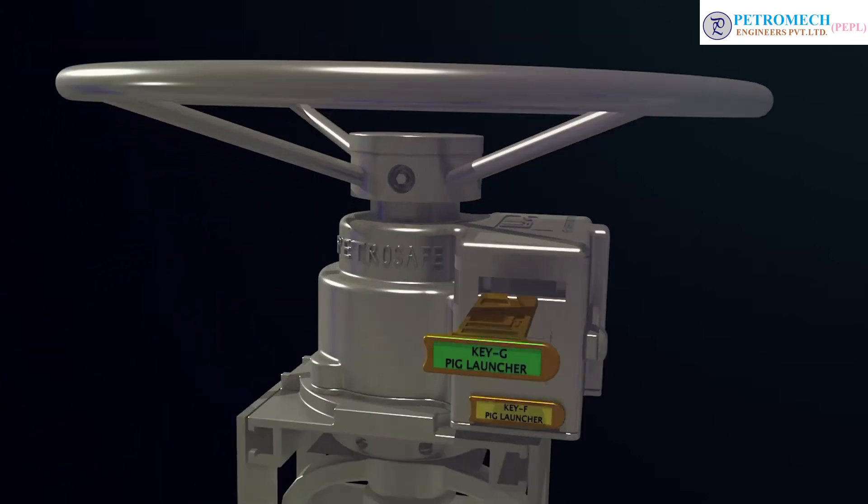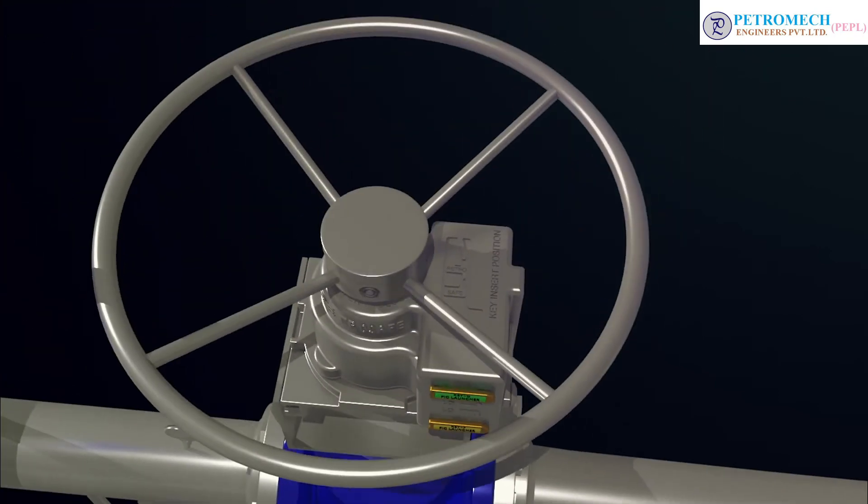Insert key G into main line valve M1. Step 20: Close the valve and release key F.